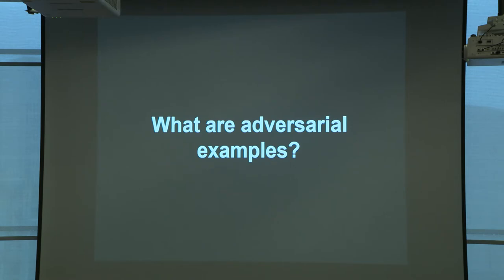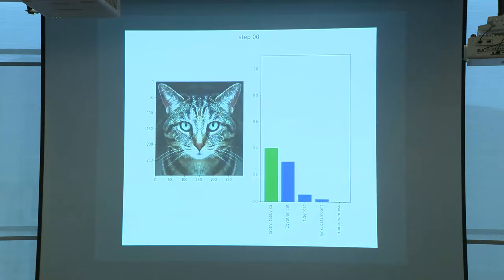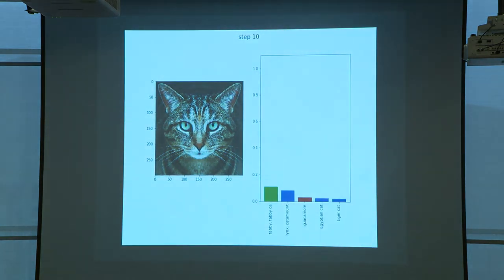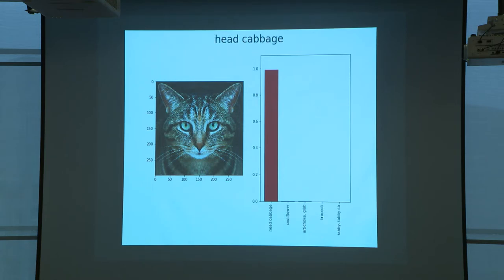Adversarial examples involve applying some imperceptible noise bounded by some epsilon to an image. You can set this constraint so it's imperceptible to any human, and we can generate these reliably. In a real-time demo, this tabby cat, after a few iterations of the generation procedure, starts to be classified as guacamole with high probability, even though it hasn't visually changed. It's not just guacamole — you can make it look like whatever you want: a lionfish, a timber wolf, flamingo, stove.